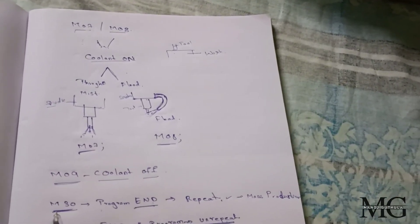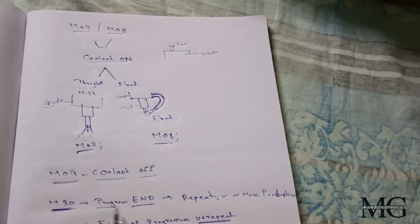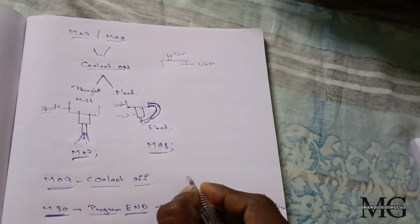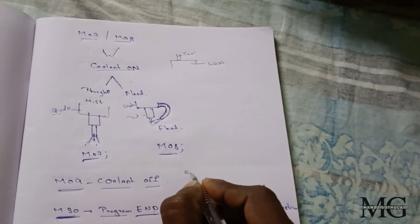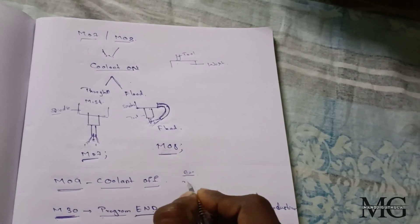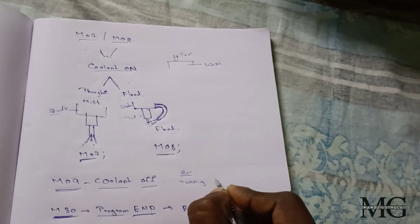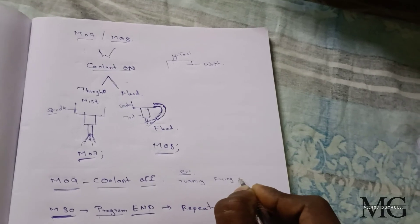And later, M30. It means program end. After completion of all three operations, as we discussed, for example, turning, facing, and drilling.